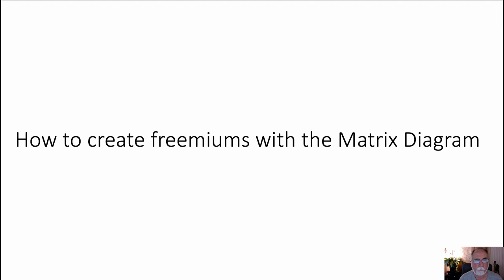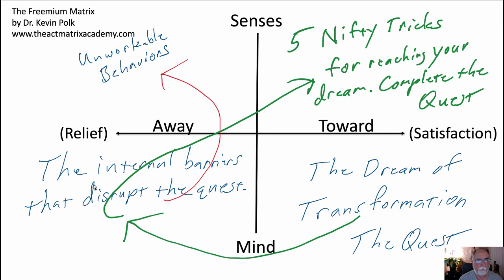So let's take a look at doing that. In general, what you see here — let me get my pointer going — in the lower right-hand quadrant, we put the dream of transformation. In a traditional matrix it's who and what's important to you, or if it's a pro-social matrix, it's what are our shared purposes. But in this case, for the freemium purpose, we're going back to the individual. All of us have these dreams of transformation, and if we've really internalized that dream, it's become a quest. We would love to reach that dream.